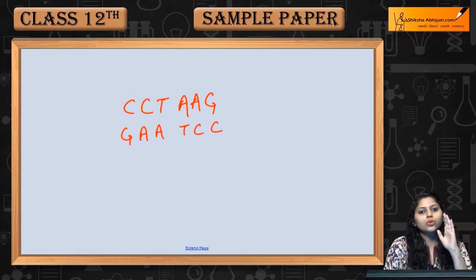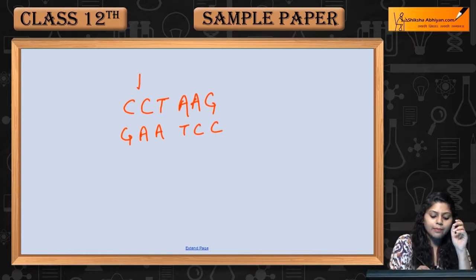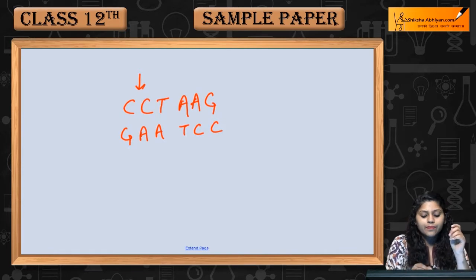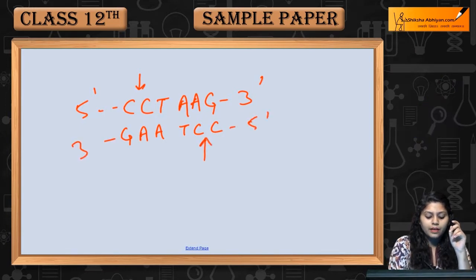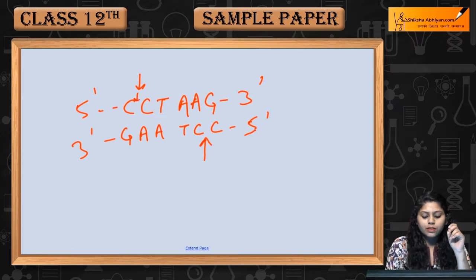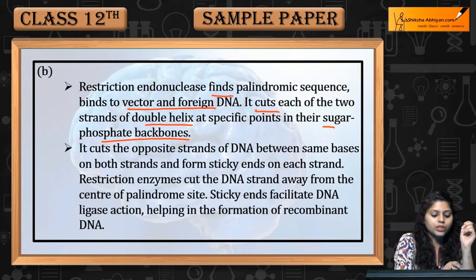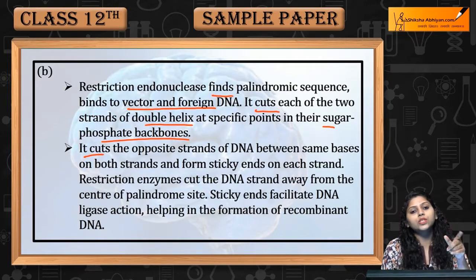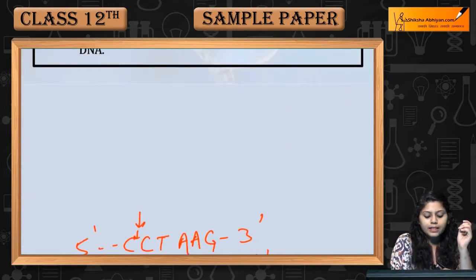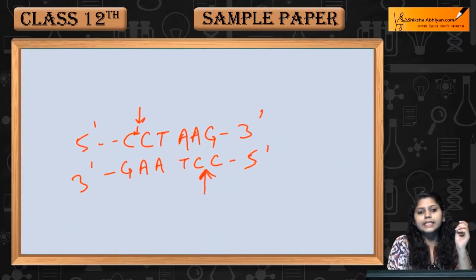So, the endonuclease cut site can be seen between C-C. In the 5' to 3' direction, it will be cut from that point. It is possible to identify the endonuclease palindromic sequence, and the particular site will be cut from there. It cuts opposite strands of DNA between the same bases on both strands — as seen here, the cut occurs between C-C.